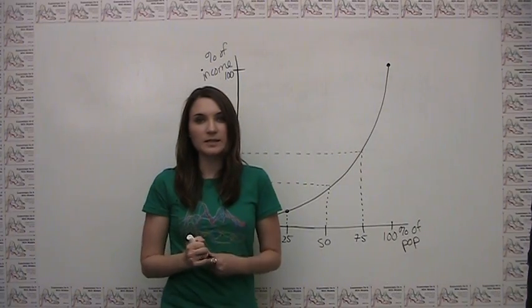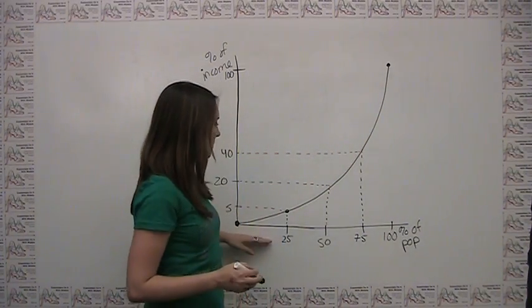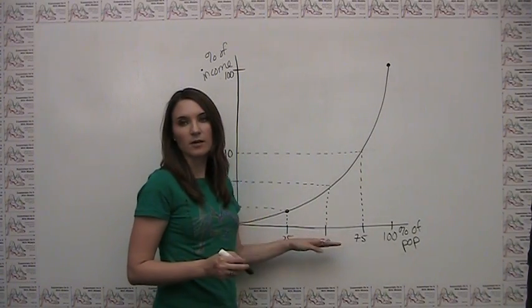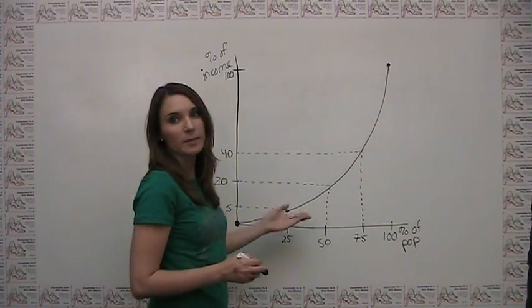In this way, it's pretty easy to see that the entire curve is constructed by looking at different percentages of the population and seeing what fraction of the total income they have.